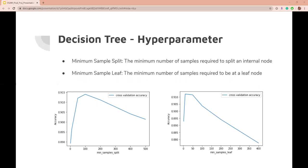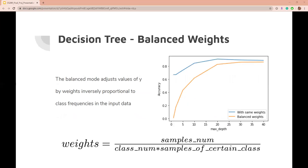In decision tree, we first tune those two parameters. We determine when the decision tree stopped dividing. Smaller values lead to later stops and vice versa. To balance the influence of different classes, we use balanced weights.